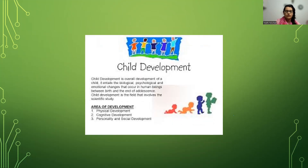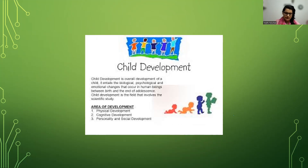So what is child development? Child development is basically the overall development of a child, which includes biological, psychological, physiological, and emotional changes that occur in human beings between birth and adolescence. It is a field involving the scientific study of physical development, cognitive development, and personality and social development.